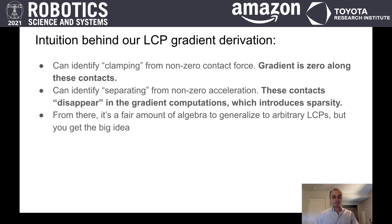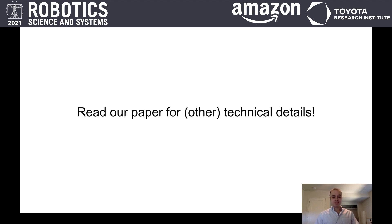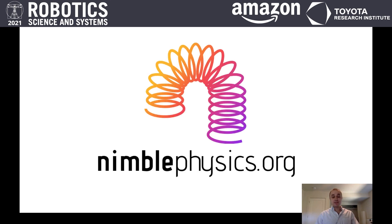The big idea is that clamping contacts will have a zero gradient along the contacts, and separating contacts basically just disappear for the sake of gradient computations. This gives us a lot of sparsity that we can exploit. We have lots of other contributions in the paper that I didn't have time to discuss, like gotchas around how to approximate gradients of continuous-time collisions, or how contact normal gradients and smooth surfaces interact. Make sure you check out the paper, and definitely visit nimblephysics.org and give Nimble a try. Thanks for watching.